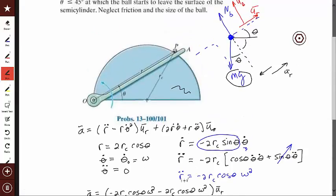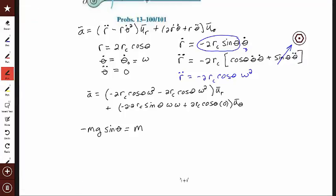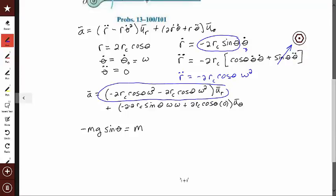So the forces in the radial direction is minus Mg sine of the angle theta. That's all the forces. And that equals the mass times acceleration in the radial direction. So that would be this term right here. This is the acceleration in the radial direction, so it would be, put it in black here, that would be minus 2 Rc cosine of theta omega squared minus 2 Rc cosine theta omega squared.